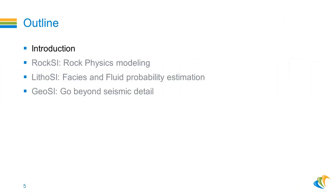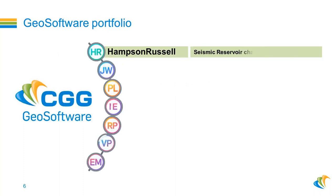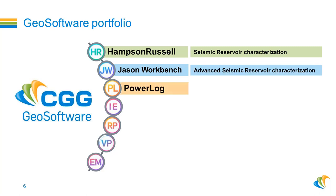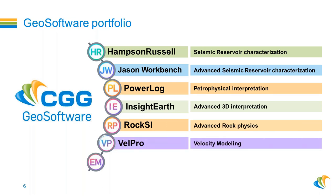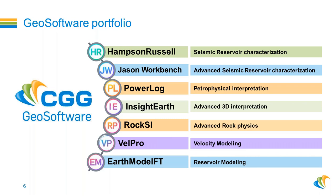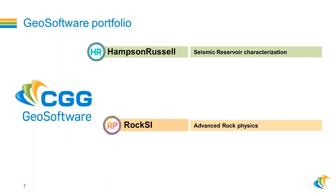Starting with the introduction: within Geo Software, we have different software products. For example, Hampson-Russell for seismic reservoir characterization, JSON Workbench for advanced seismic reservoir characterization, PowerLock for petrophysical interpretation and analysis, Insight Earth for advanced terrain interpretation, RUCSI for advanced rock physics modeling, WellPro for velocity modeling, and EarthModelFT for reservoir modeling. You can transfer your reservoir characterization results to reservoir engineering grids using EarthModelFT. Today I will talk about RUCSI, which is an advanced rock physics module in Hampson-Russell and also available as a stand-alone using the CGG Geo Software Platform, and two modules from Hampson-Russell: LITOSI and GOSI.